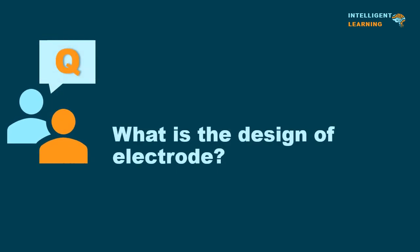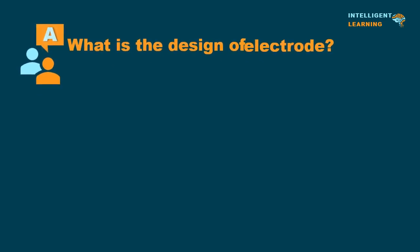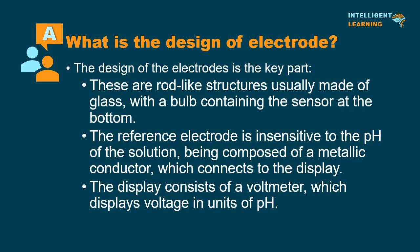What is the design of the electrode? The design of the electrodes is the key part. These are rod-like structures usually made of glass, with a bulb containing the sensor at the bottom. The reference electrode is insensitive to the pH of the solution, being composed of a metallic conductor which connects to the display. The display consists of a voltmeter which displays voltage in units of pH. On immersion of the glass electrode and the reference electrode in the test solution, an electrical circuit is completed, in which there is a potential difference created and detected by the voltmeter. Nowadays, many pH meters use a combination probe, constructed with the glass electrode and the reference electrode contained within a single probe.